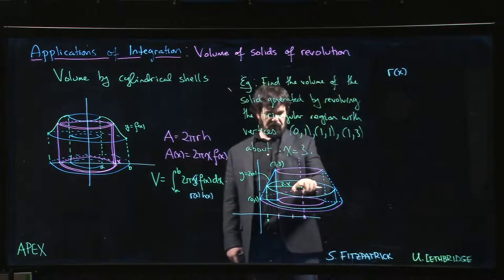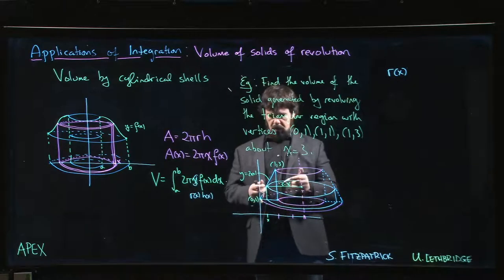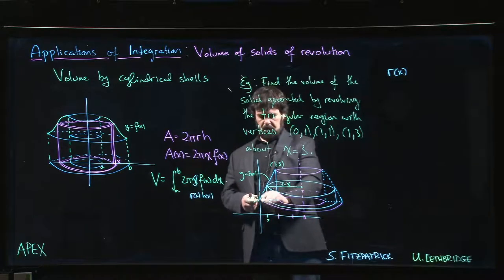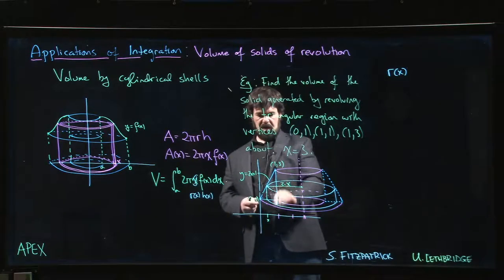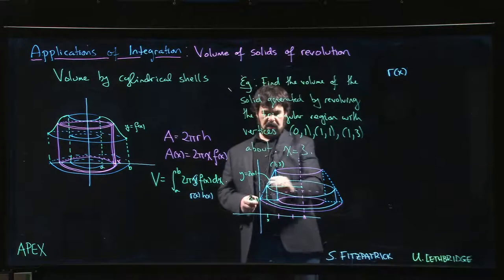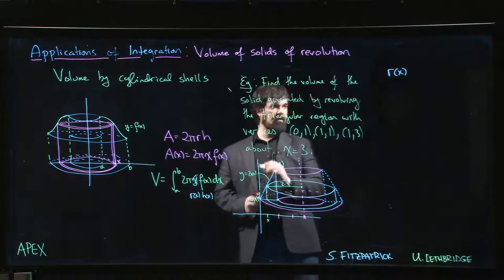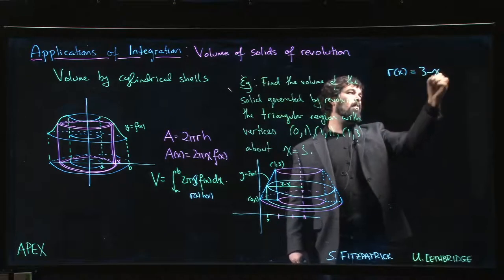Well, it's the distance from our axis of rotation to a point, an x value. So x is going to be here. So we're drawing these vertical lines through our triangle. There's a particular x. So, of course, from here to here is 3. From here to there is x. So the radius is 3 minus x.